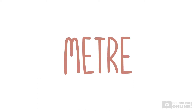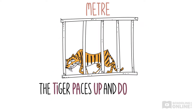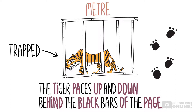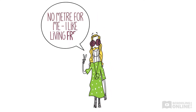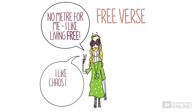Of course, that's not the only effect that meter can have. Remember the poem about the tiger? In that example, the poet uses meter to recreate the tiger's movement, pacing up and down its cage: 'The tiger paces up and down behind the black bars of the page.' The way that every second syllable is stressed makes the rhythm sound like footsteps, mimicking the tiger's pacing. This reminds us of how the tiger is trapped — that's the poem's underlying message. But what if a poem has no meter? Meter is about order. So if a poet deliberately writes without it — which is called free verse — then they're probably trying to convey something related to chaos, freedom, or spontaneity.